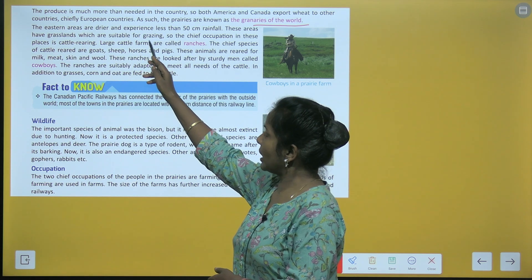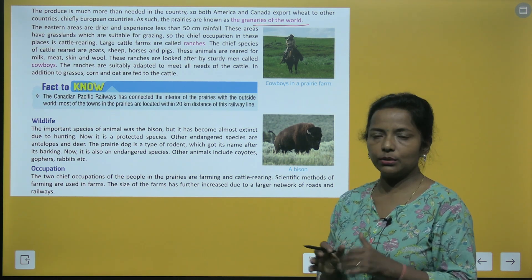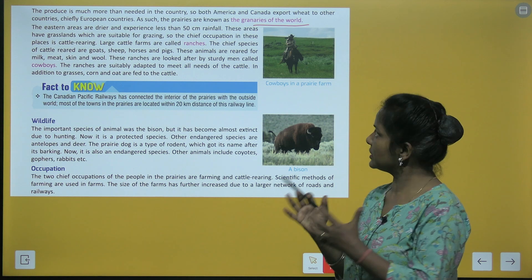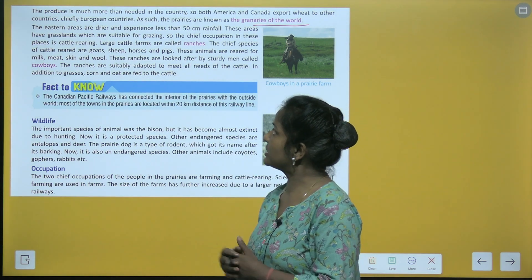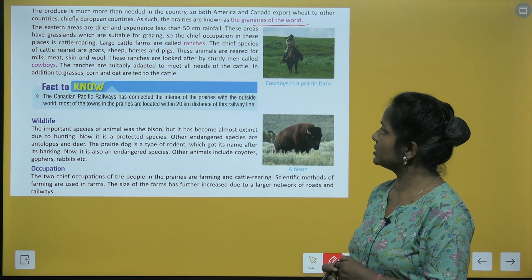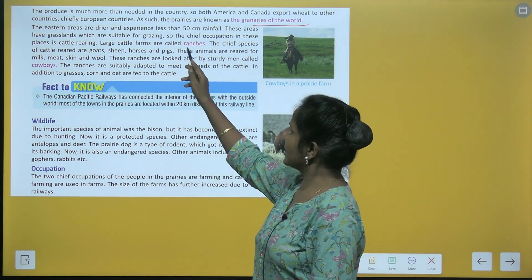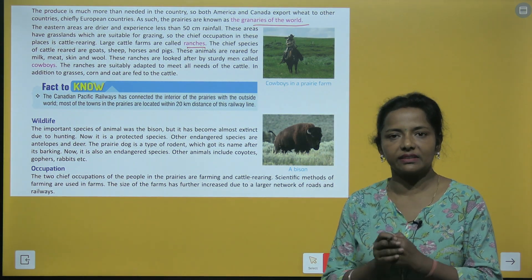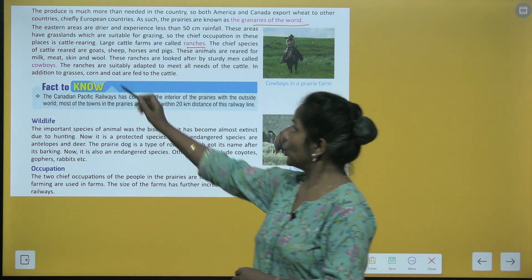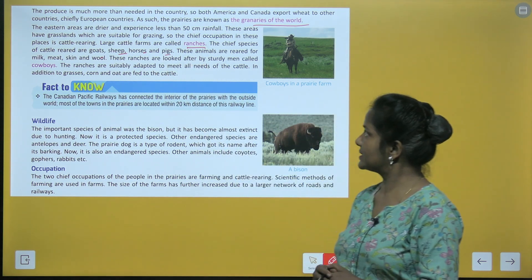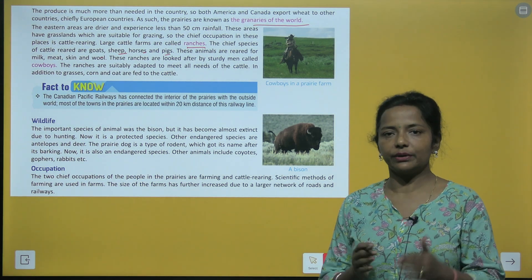The eastern areas are drier and experience less than 50 centimeters rainfall. These areas have grasslands suitable for grazing, so the chief occupation is cattle rearing. Large cattle farms are called ranches. The chief species reared are goats, sheep, horses and pigs — for milk, meat, skin and wool.